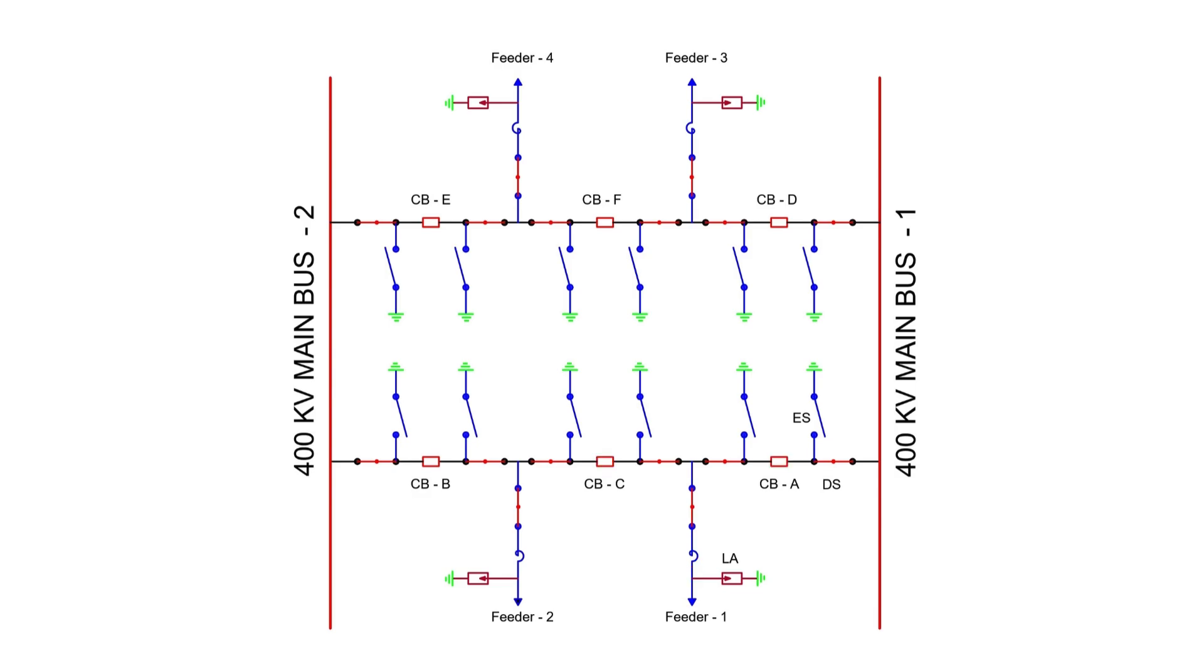For maintenance, if we need to work on circuit breaker B of diagonal one, we can open circuit breaker B, isolate it by opening these two isolators and close this earth switch. Notice that neither feeder one nor feeder two will go out of service. Feeder two will still be fed through circuit breaker A and circuit breaker C.